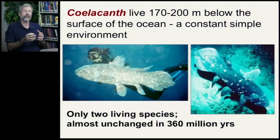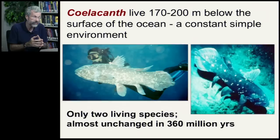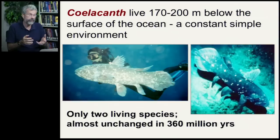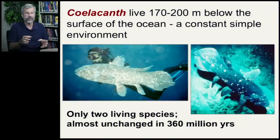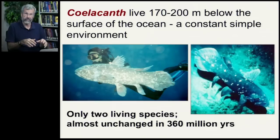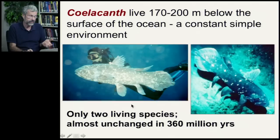Now let's consider the coelacanth — a species that's been around for 300 million years, three times as long as flowering plants have existed on Earth's surface. They live in a very simple environment, about 200 meters — roughly 650 feet — below the surface. It never changes down there; it's constant and simple. There are simply no opportunities to become subdivided or to have any ecological or reproductive isolation. Given the uniformity and persistence of this broad, bland world they live in, it's really not surprising that there are only two living species of coelacanths, virtually unchanged over the last 360 million years.